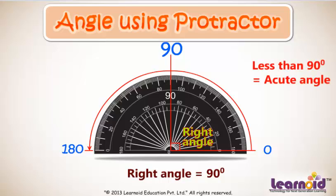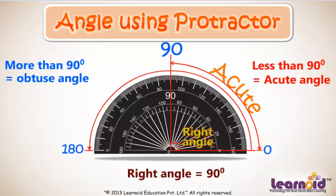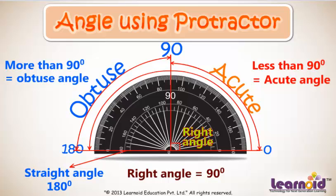Any angle between 0 and 90 degrees is called an acute angle. An angle more than 90 degrees up to 180 degrees is called an obtuse angle. The baseline is 180 degrees and is called a straight angle.